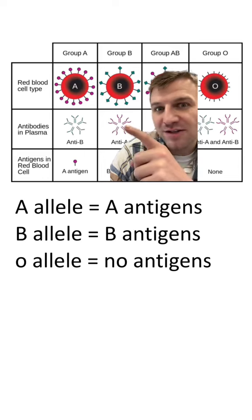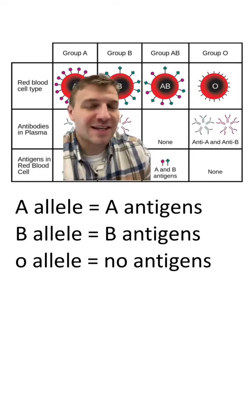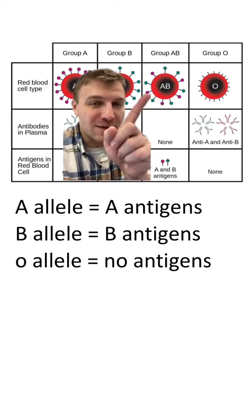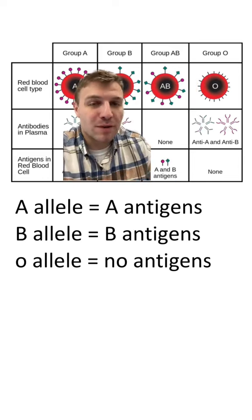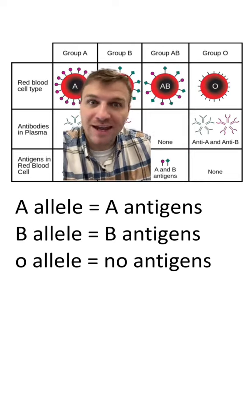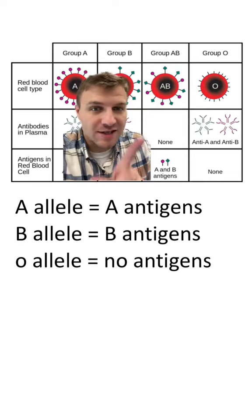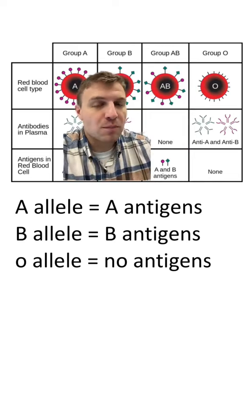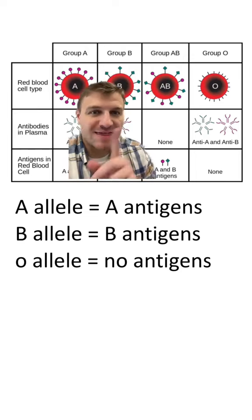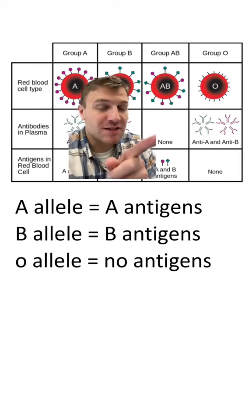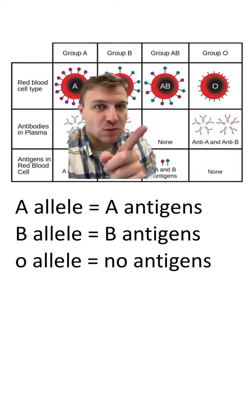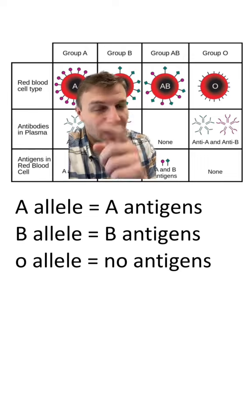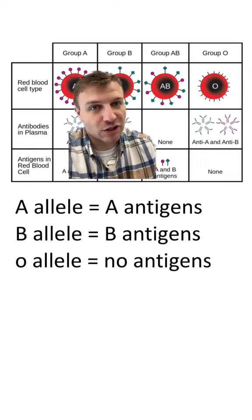These A antibodies will attack A blood. If you have AB blood, you have both A and B antigens. However, you don't produce any antibodies, because if you did, those proteins would attack your own blood, and that's not good.